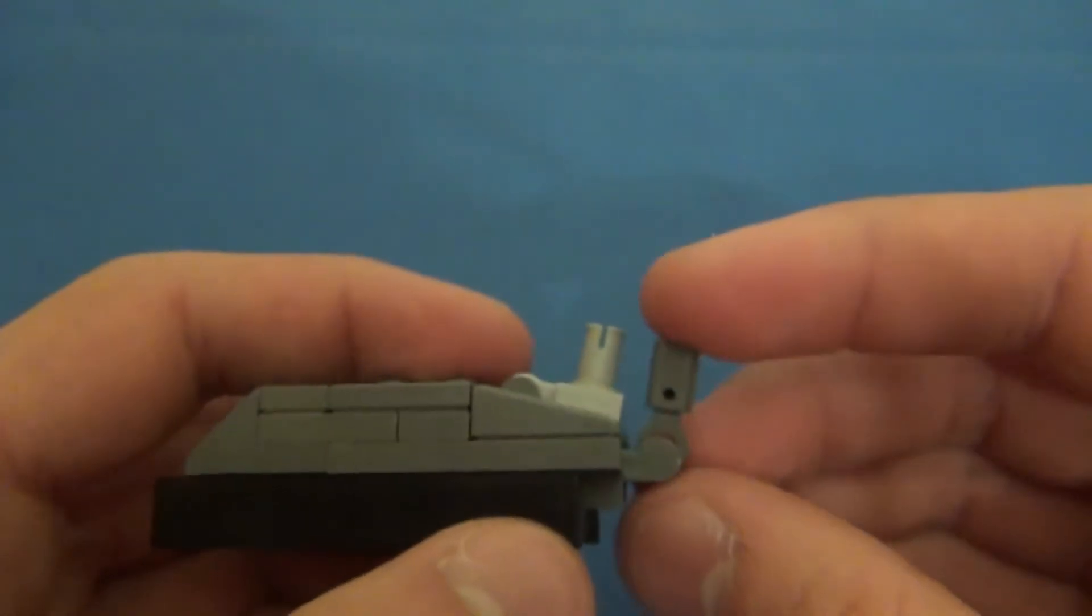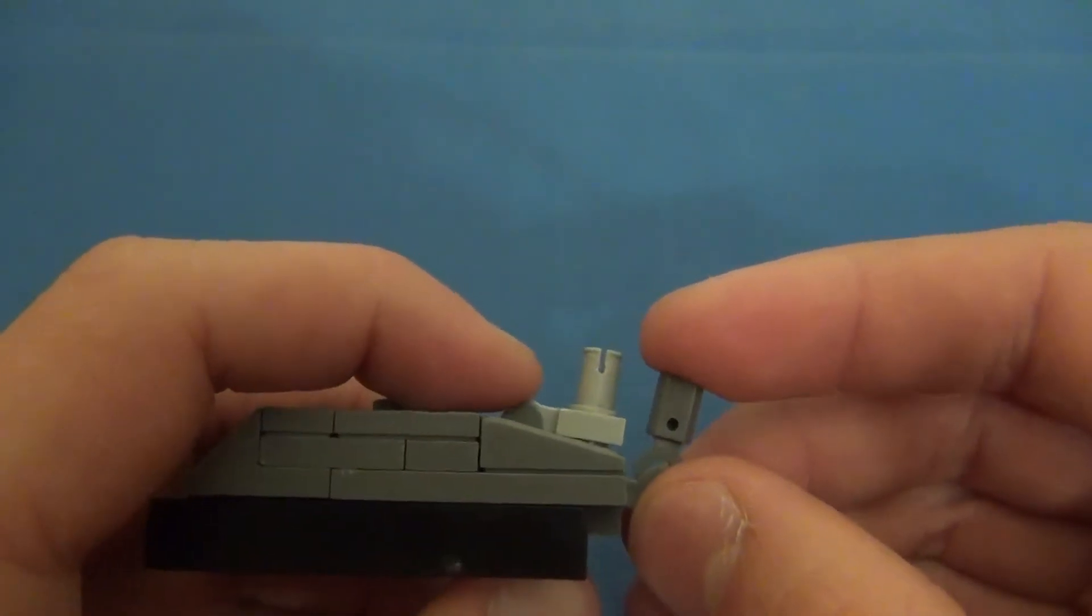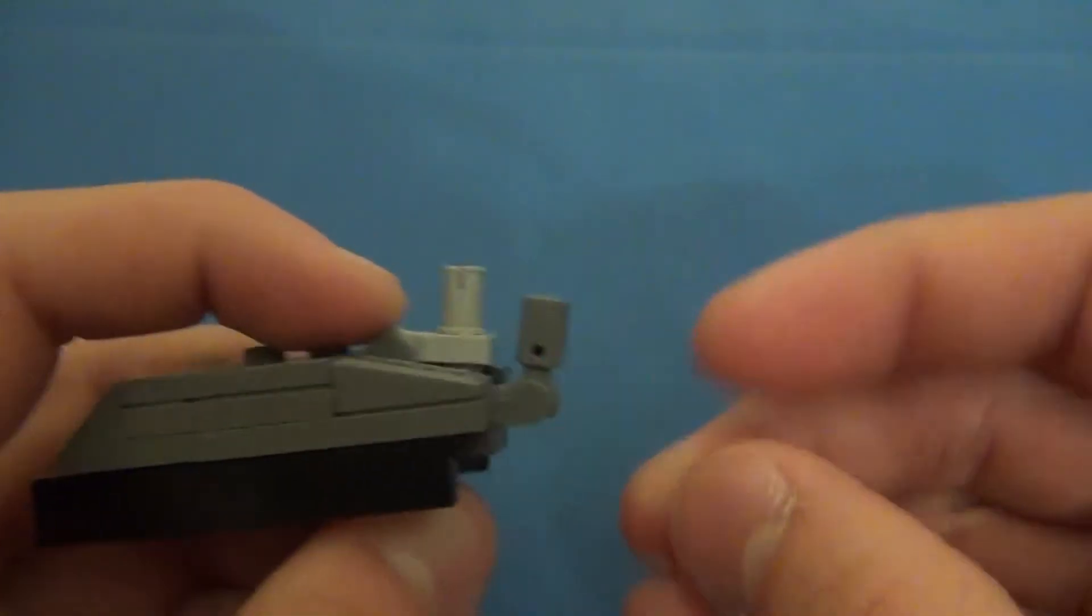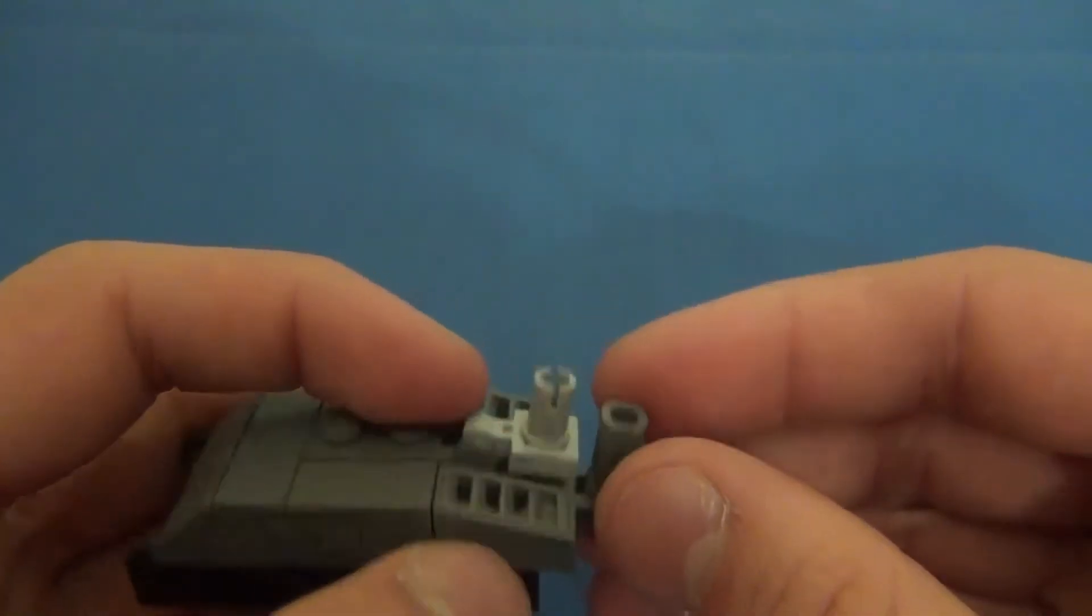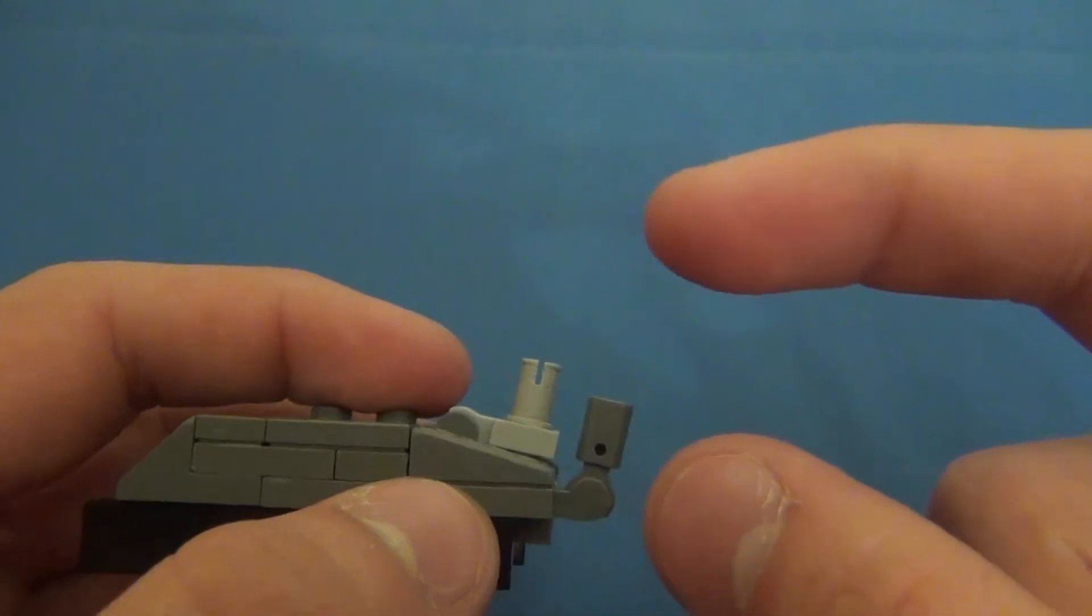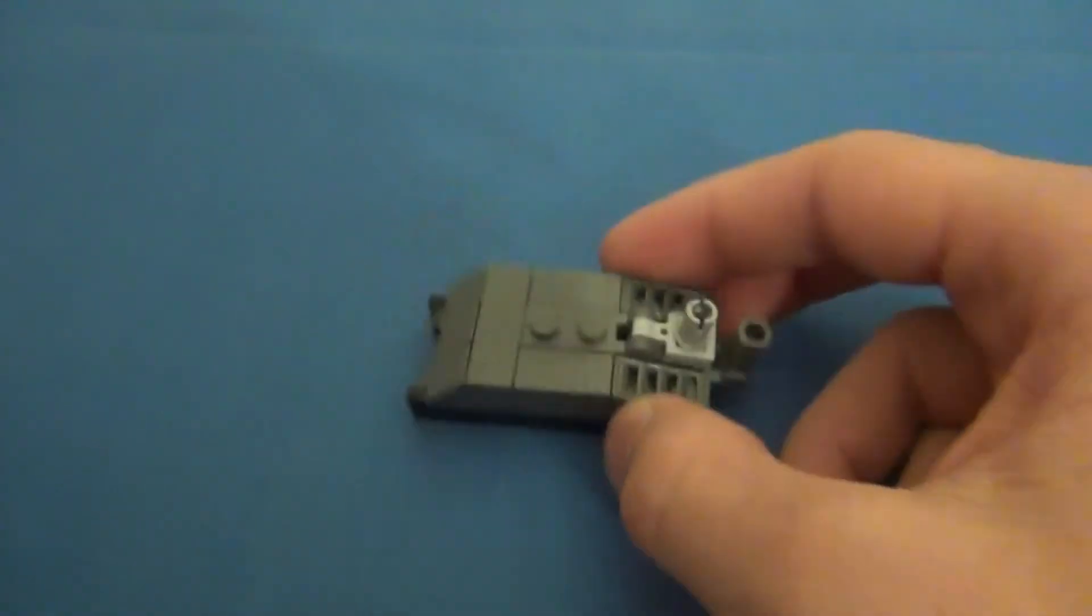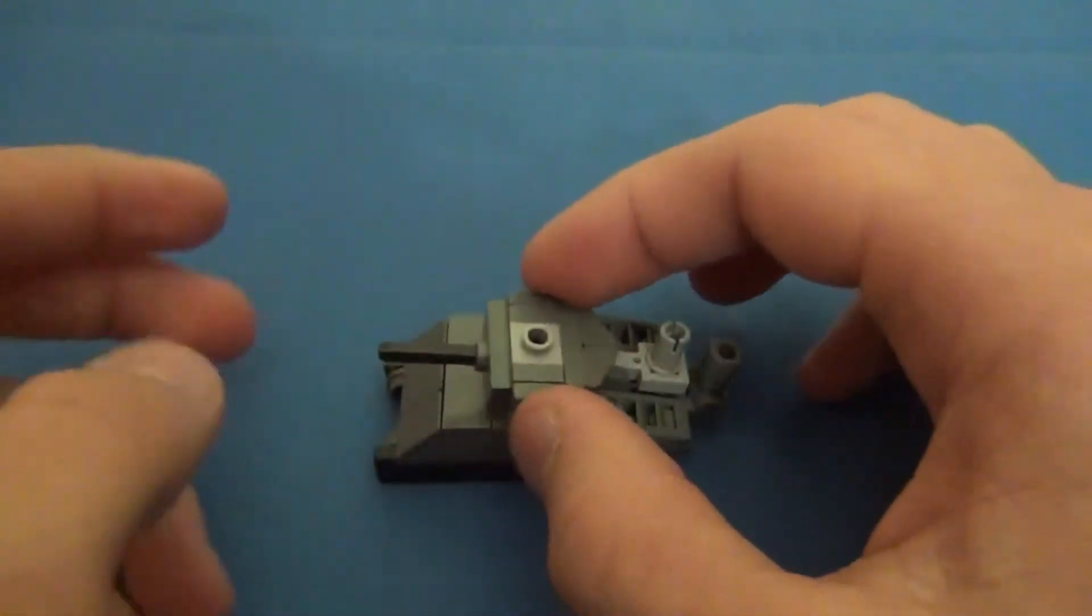Then you'll take the dark grey piece, which I do not know its name, and you'll put it on the bar right here. And I was trying really hard to make them each equal length but it was really hard to do that, so I did it as best as I could.